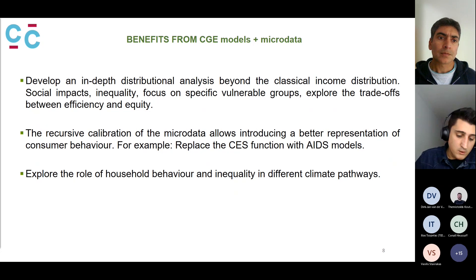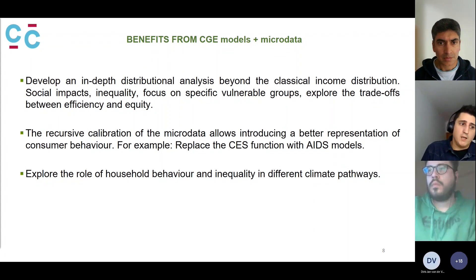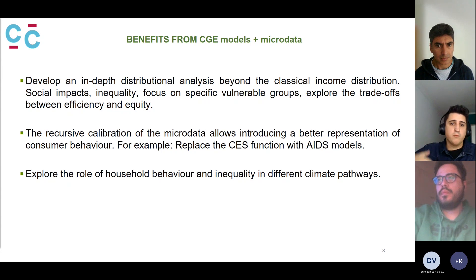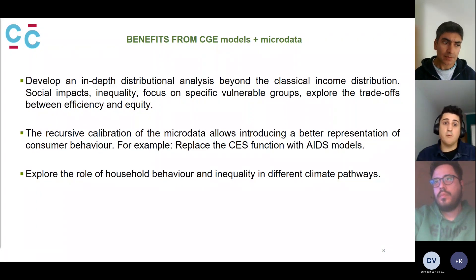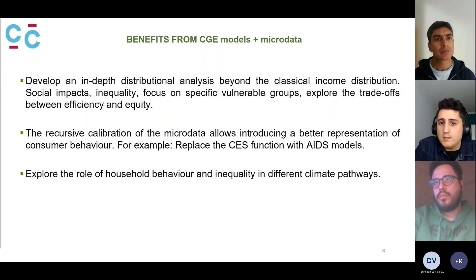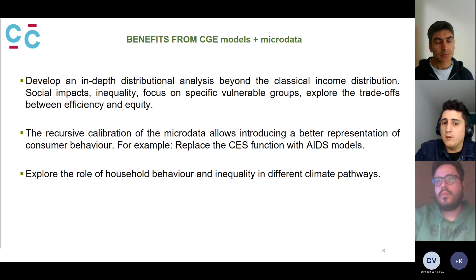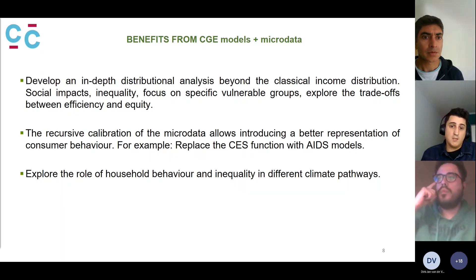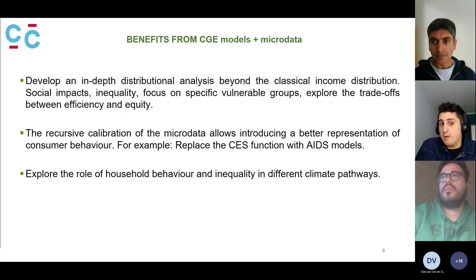Some of the benefits we have found — not only in CHANCE but in other approaches done before — from linking micro household data with CGE models are: we can develop in-depth distributional analysis beyond the usual 10 income groups. You can see what is happening across other socioeconomic characteristics that may be even more important — for example, what is happening with elderly people — and focus on inequality, which is normally something we cannot analyze in a standard CGE, or examine what is happening for specific vulnerable groups.